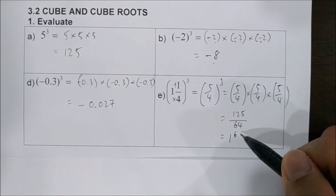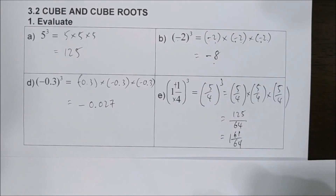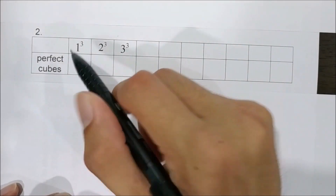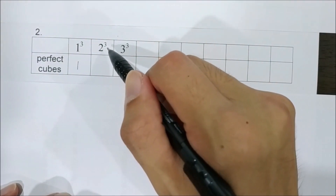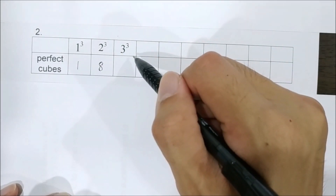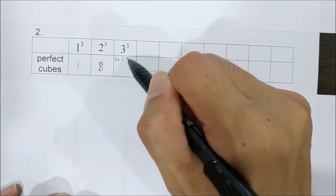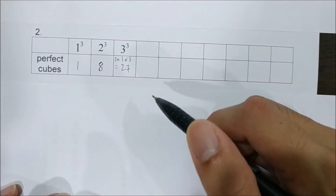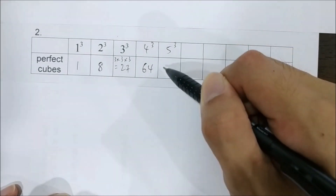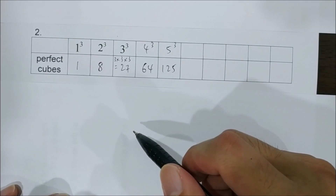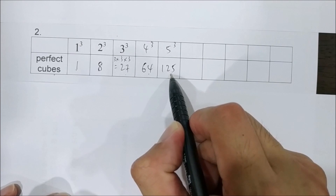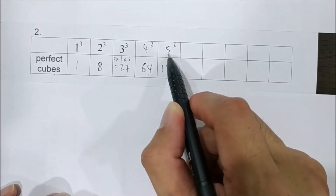The next part is finding perfect cubes. 1 cubed gives 1; 2 cubed means 2 times 2 times 2, giving 8; 3 cubed means 3 times 3 times 3, giving 27; 4 cubed gives 64; 5 cubed gives 125. So perfect cubes are these numbers, which are the cube of a whole number.